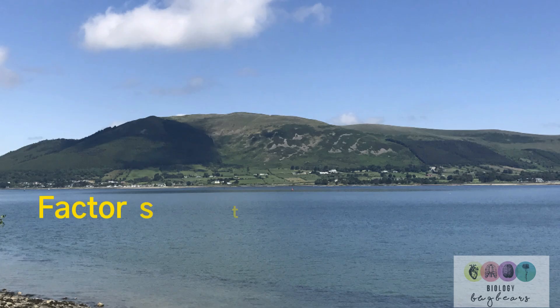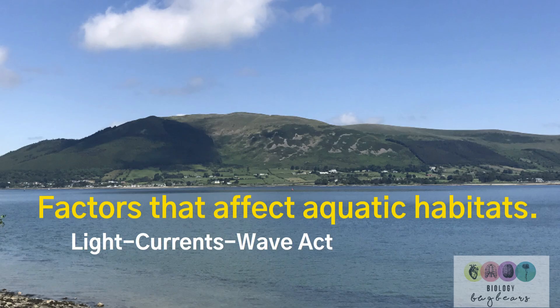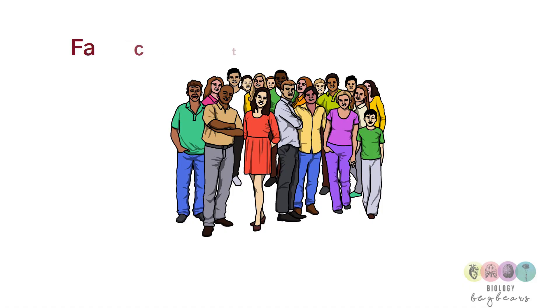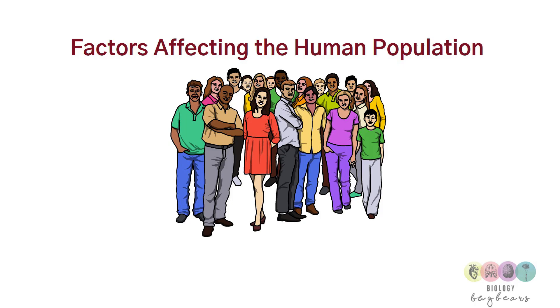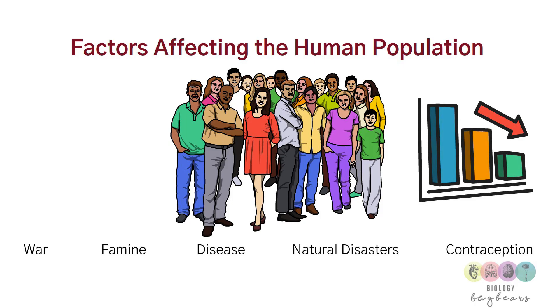Factors affecting aquatic habitats — which has never been asked and could appear on your exam — include light penetration, the action of currents, wave action, salt concentration, and oxygen concentration. Factors affecting the human population include war, famine, disease, natural disasters, and contraception, all of which can cause a decline in population.